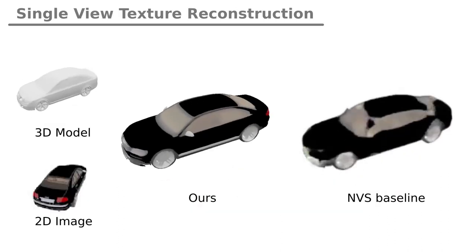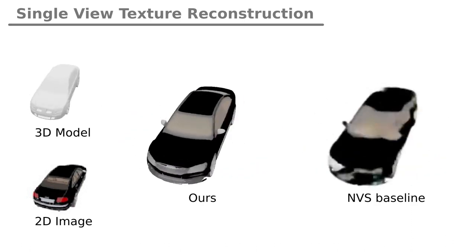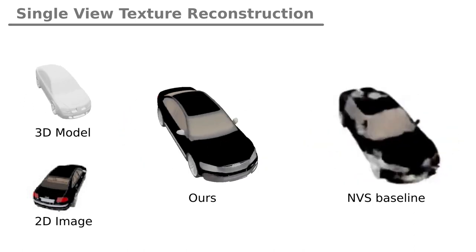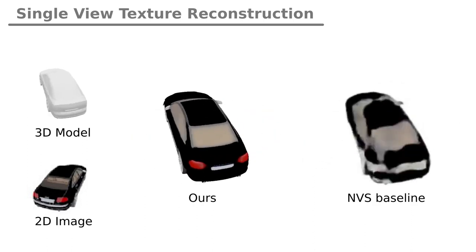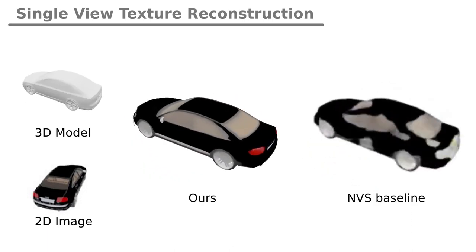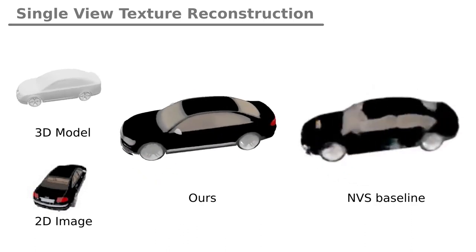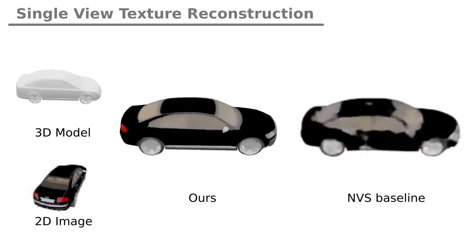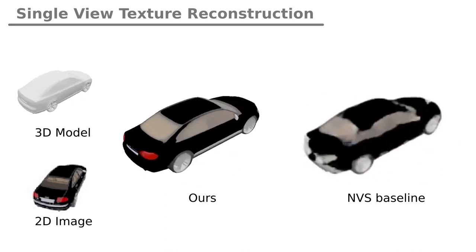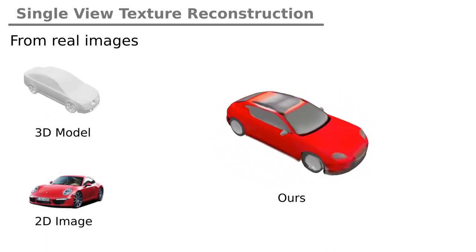We applied the conditional model for single-view texture reconstruction. The model is trained in a supervised fashion on single categories of the ShapeNet dataset. Our method is able to reconstruct plausible textures from a single image for the corresponding shape. We compared our method to another view synthesis baseline that uses a simple unit architecture. In contrast to the baseline, our model inherently fulfills 3D consistency. While trained on synthetic input images, our method generalizes reasonably well to real input images.